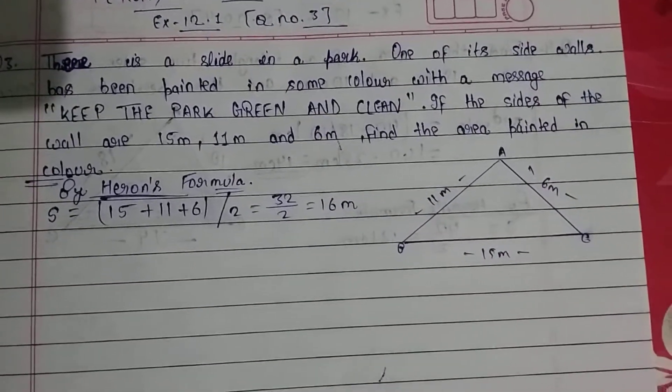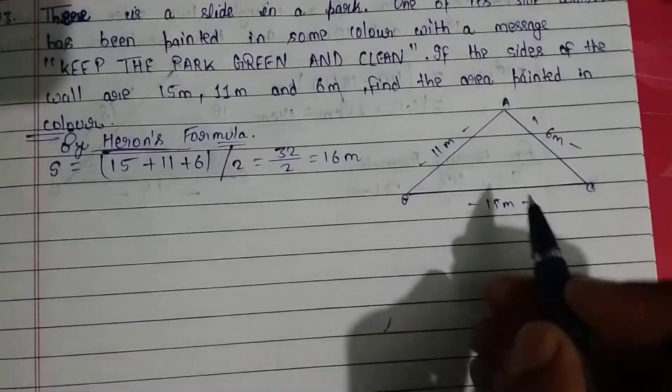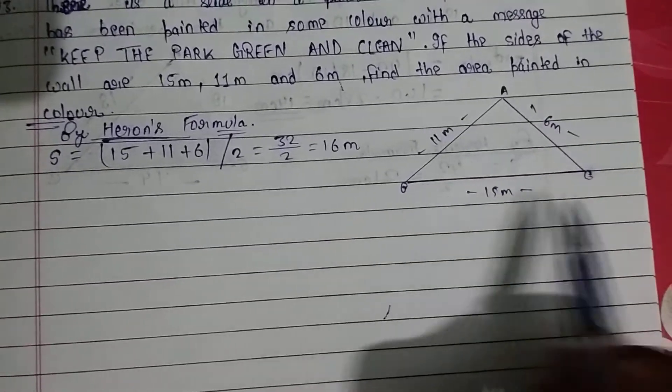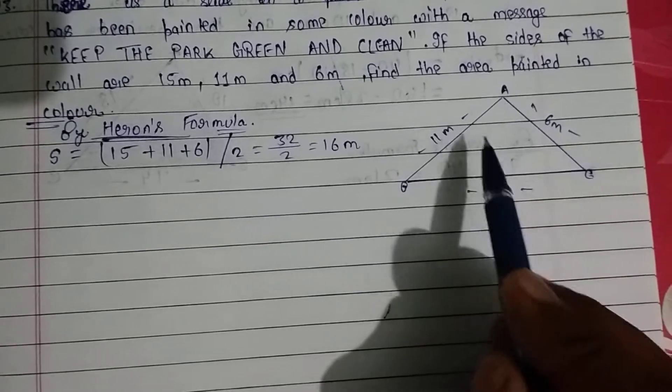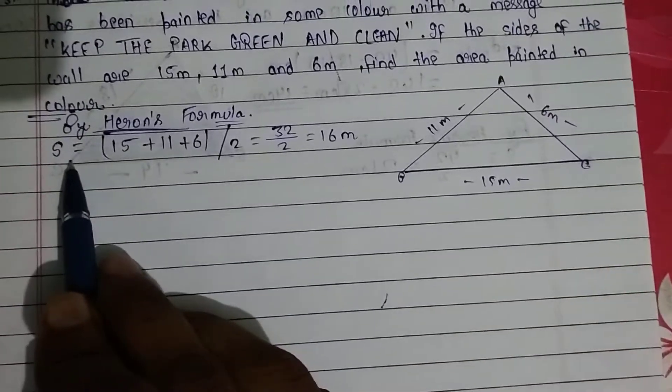We have a triangle. Let ABC be the wall. We'll use Heron's formula to solve this problem.